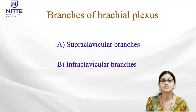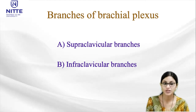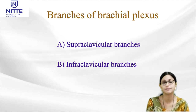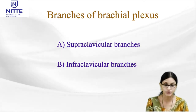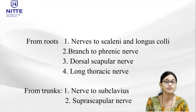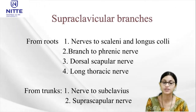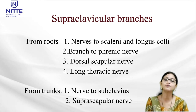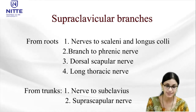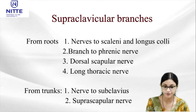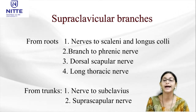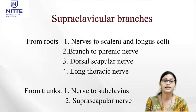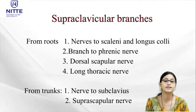The branches of the brachial plexus are grouped into supraclavicular branches — given above the clavicle — and infraclavicular branches — given below the clavicle. Supraclavicular branches are further classified into branches from roots and branches from trunks. Root branches include: nerves to scalenius and longus colli, branch to join the phrenic nerve, dorsal scapular nerve, and long thoracic nerve. Trunk branches are: nerve to subclavius and suprascapular nerve.